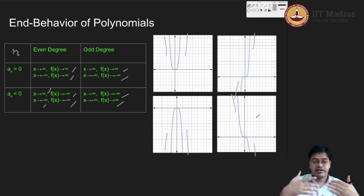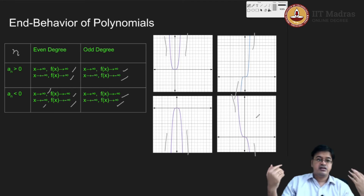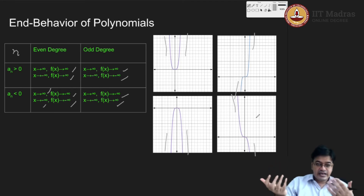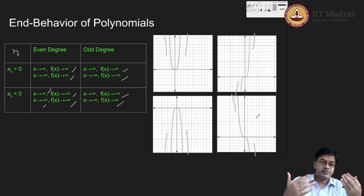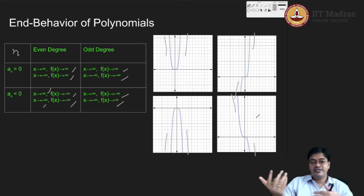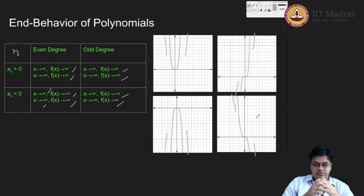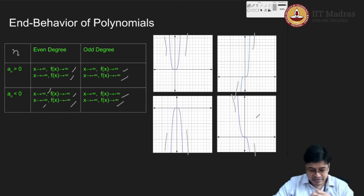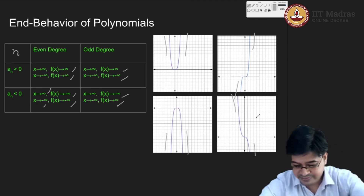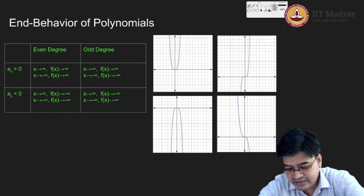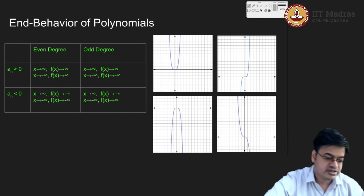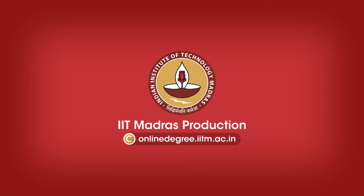Now we have a much better hold over the end behavior of polynomials. By looking at the end behavior of a graph, you can determine whether the leading term of the polynomial is of odd degree or even degree — and this is one more level of understanding we have achieved. But we further need a better understanding of the functions.